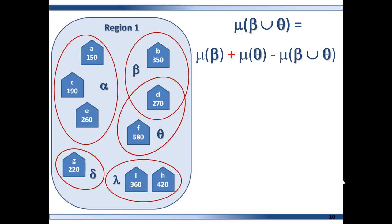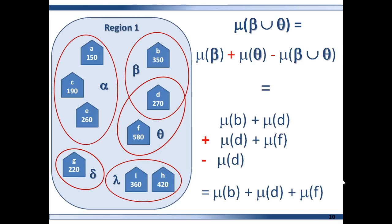The measure of the union of sets Beta and Theta equals the measure of set Beta plus the measure of set Theta, subtracting out the measure for the intersection of sets Beta and Theta, which is Hospital D. So when deriving the measure of a union of sets that are not disjoint, do not double count elements that are in multiple sets. The measure for set Beta is the measure for Hospital B plus Hospital D, and the measure for set Theta is Hospital D plus Hospital F. Hospital D was double counted, but there is only one Hospital D in the union, so it must be subtracted out.